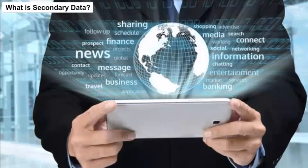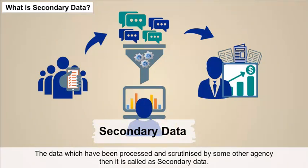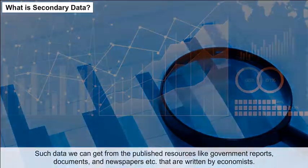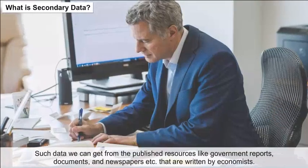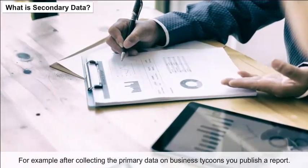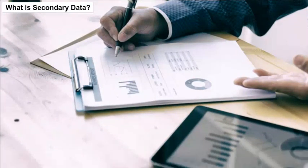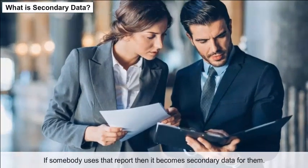Secondary data is data which has been processed and scrutinized by some other agency. Such data can be obtained from published resources like government reports, documents, and newspapers written by economists. For example, after collecting primary data on business tycoons and publishing a report, if somebody else uses that report, it becomes secondary data for them.